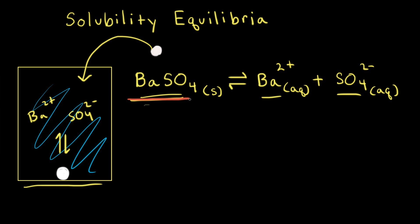Barium sulfate can dissolve to form barium 2+ ions and sulfate anions in solution, and it's possible for the barium 2+ ion to combine with the sulfate anion to form a precipitate of barium sulfate. When the rate of dissolution is equal to the rate of precipitation, the system is at equilibrium. These types of equilibria are referred to as solubility equilibria.